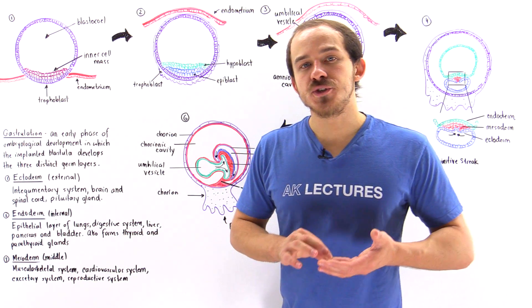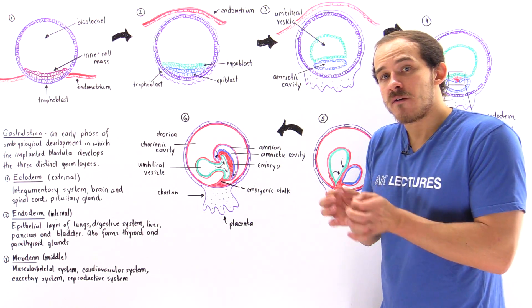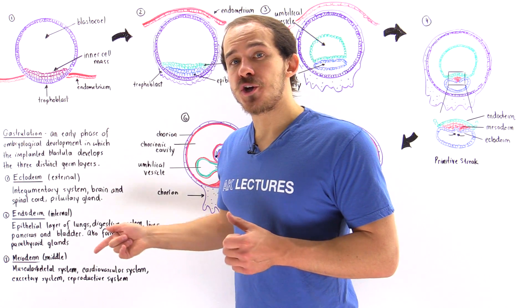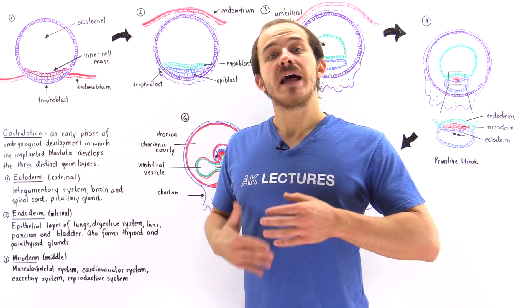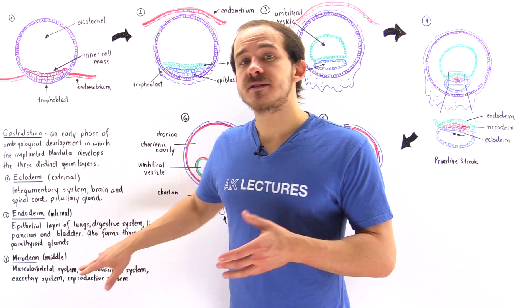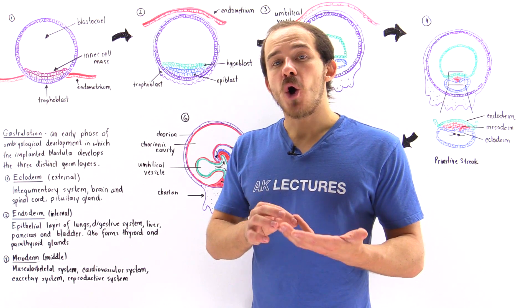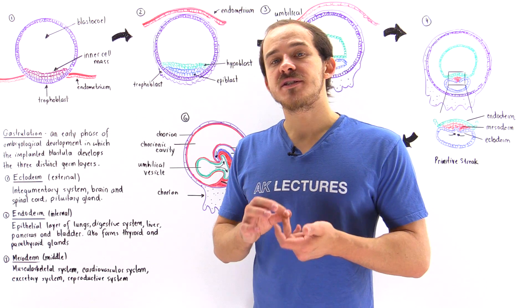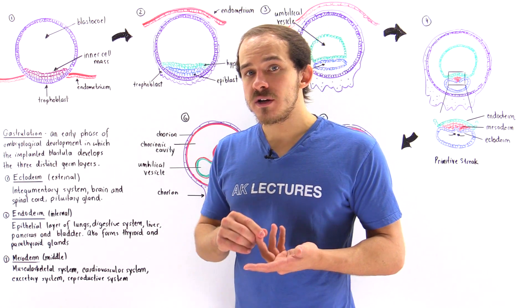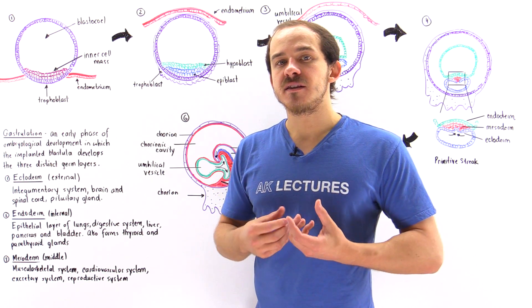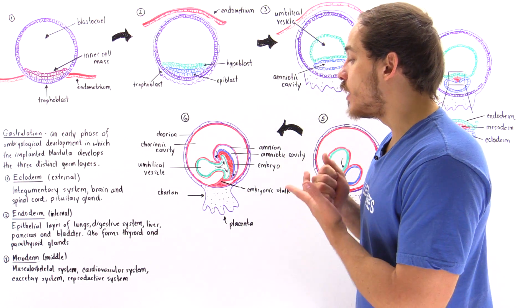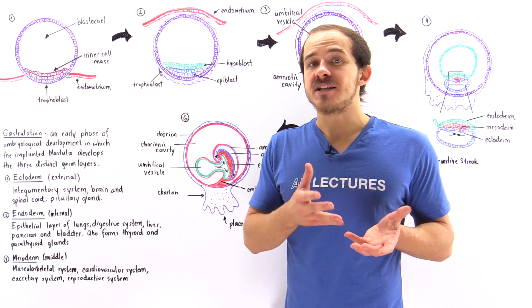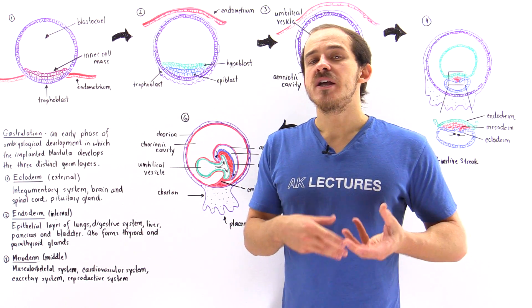Finally, what about the mesoderm? The mesoderm is the middle layer of the developing embryo, found between the ectoderm and endoderm. It essentially creates everything between the skin and our digestive epithelium. So we have the musculoskeletal system — including bone and cartilage — and the three types of muscles: cardiac muscle, smooth muscle, and skeletal muscle. Because we form the cardiac muscle, we also form the cardiovascular system, including the heart and blood vessels. We also form the excretory system and the reproductive system, including the ovaries of the female and the testes of the male.